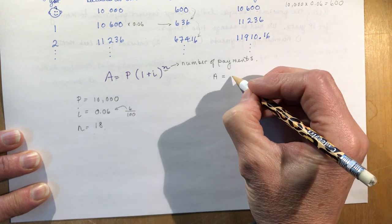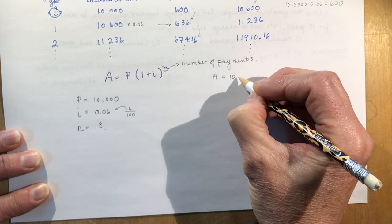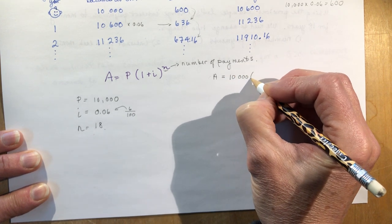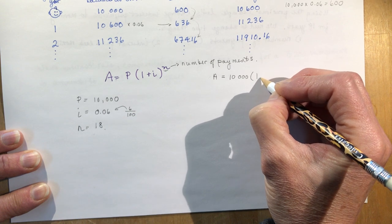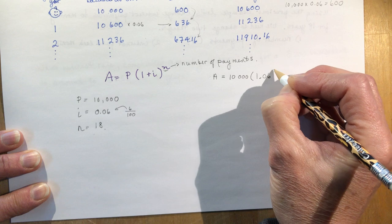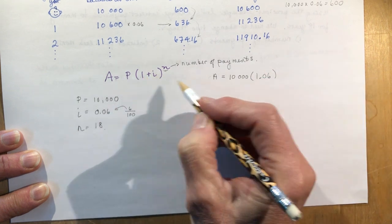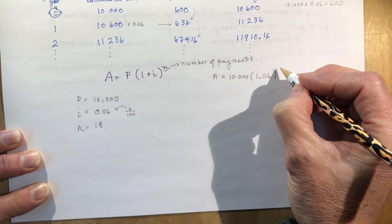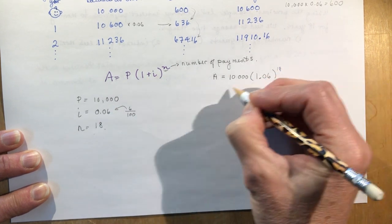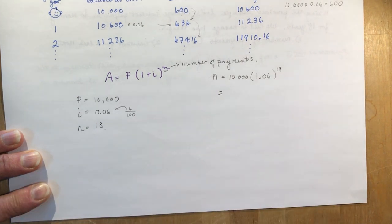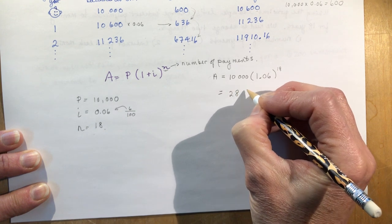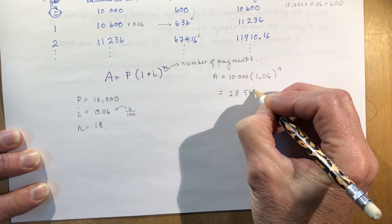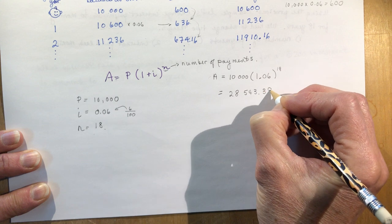All I have to do is plug that in. So I have 10,000 times (1 + 0.06) to the power of 18. If you do that calculation, you're going to get $28,543.39.